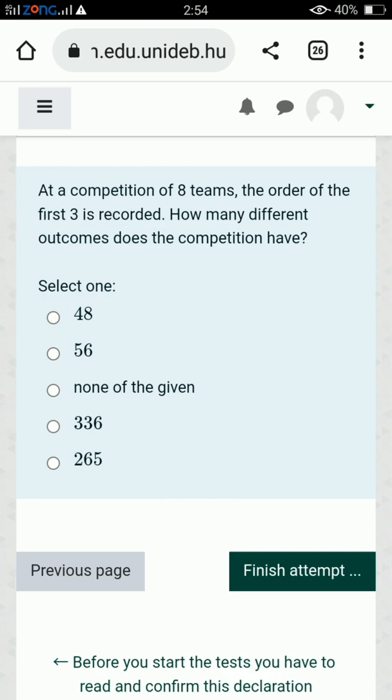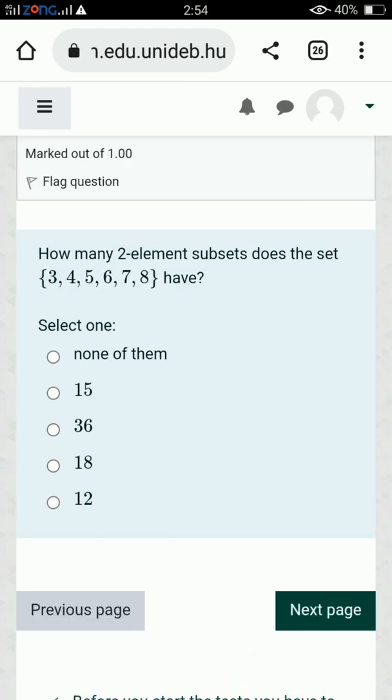So the first one is: At a competition of eight teams, the order of the first three is recorded. How many different outcomes does the competition have?